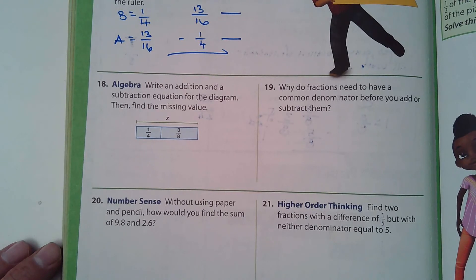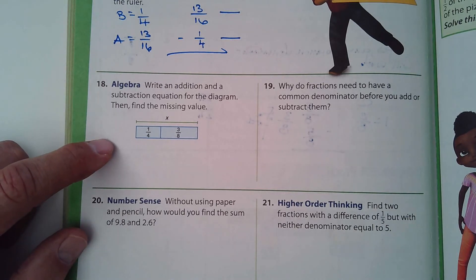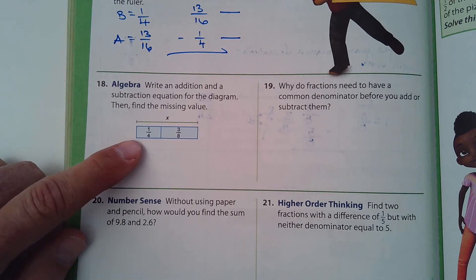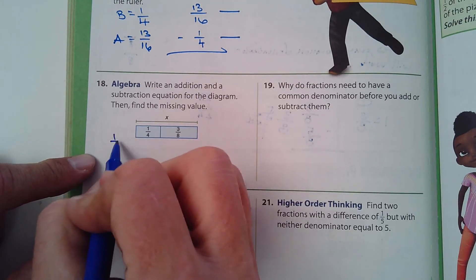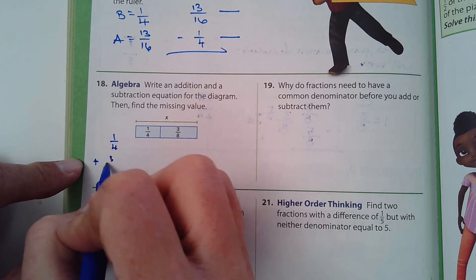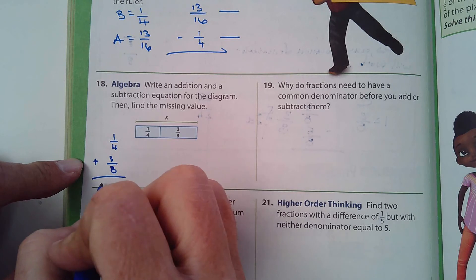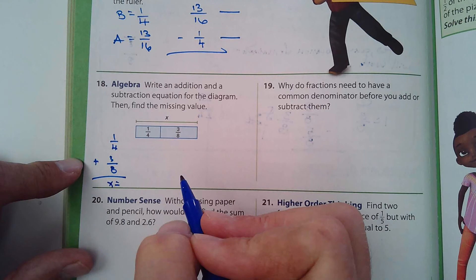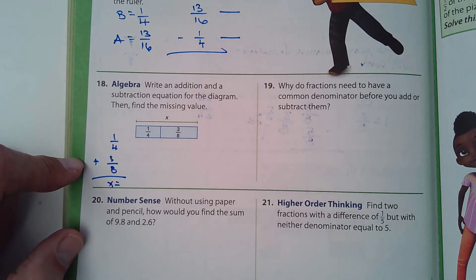Number 18. Write an addition and subtraction equation for the diagram and then find the missing value. So an addition and subtraction. So an addition would be one quarter plus three eighths. And that equals, that would be X equals what the answer is.